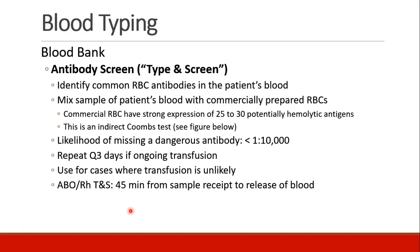Let's talk about some common things that we do with the blood bank. The first is a type and screen, which is technically an antibody screen. We're looking for any common red blood cell antibodies in the patient's blood. We take a sample of the patient's blood and mix it with commercially prepared red blood cells that have strong expression of about 25 or 30 of the most common hemolytic antigens. This is called an indirect Coombs test. If it comes up negative — no sign of a reaction — the chance that you've missed a dangerous antibody is less than 1 in 10,000.